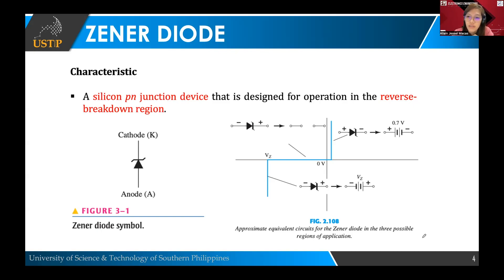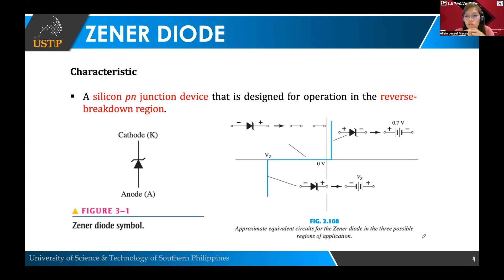But for the Zener diode, it can actually operate in the reverse bias condition, given that your bias voltage is equal to or greater than what we call the reverse breakdown voltage set in a Zener diode.